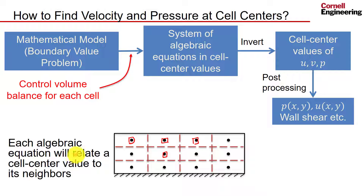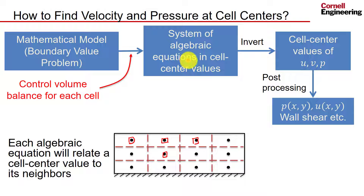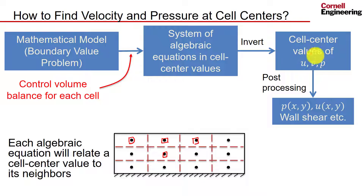Let's get the Fluent solver to solve the boundary value problem for us. We have specified the boundary value problem in Fluent and given it a mesh, so it can do a control volume balance for each cell and derive the system of algebraic equations for cell center values. This gives us 15,000 algebraic equations on our mesh, and the solver can invert that to calculate the cell center values of U, V, and P.